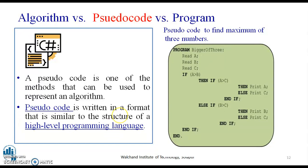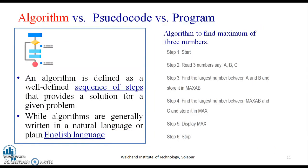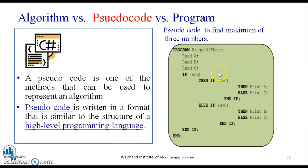Pseudocode is one of the methods that can be used to represent an algorithm. Pseudocode is written in a format that is similar to the structure of high level programming language. Now you can see over here. Here, the pseudocode is to find the maximum of three numbers and the three numbers are written in a higher level programming language. That is read A, read B, read C. If the conditional statements have been used, whereas here the sentences were used. Here, the conditional operators and if-else and then loops are used to write the same program that is for finding the maximum of the three numbers.